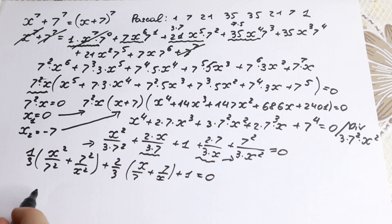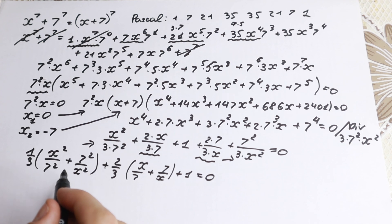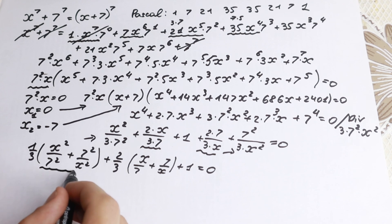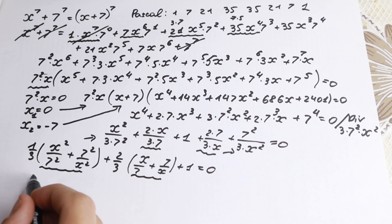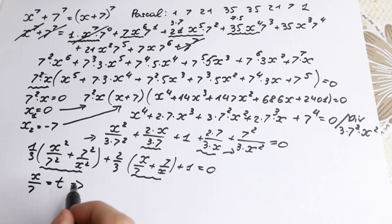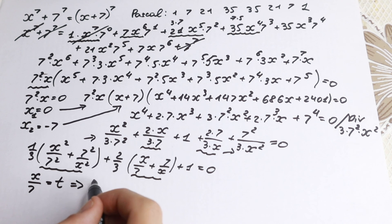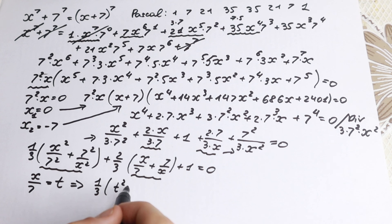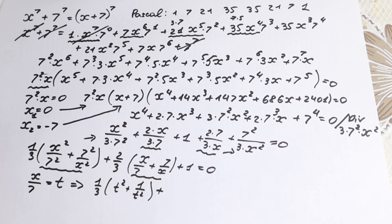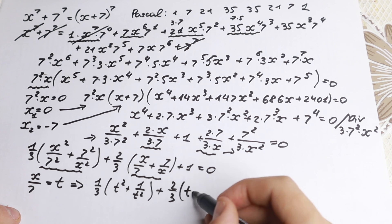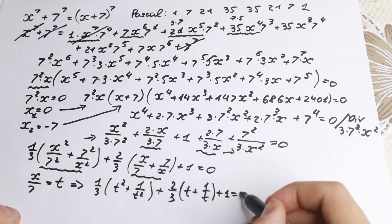With the substitution x/7 = t, we get: (1/3)(t² + 1/t²) + (2/3)(t + 1/t) + 1 = 0. Now we apply a second substitution: let t + 1/t = u, so t² + 1/t² = u² - 2. This transforms our equation into a quadratic in u.